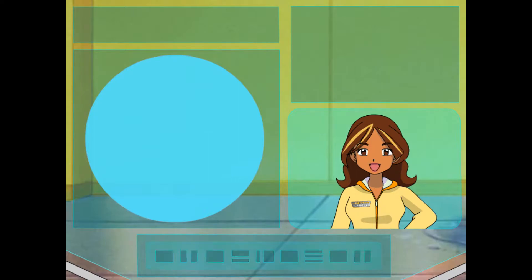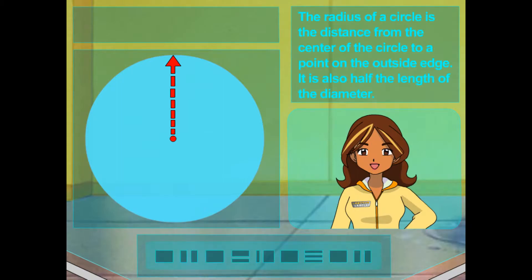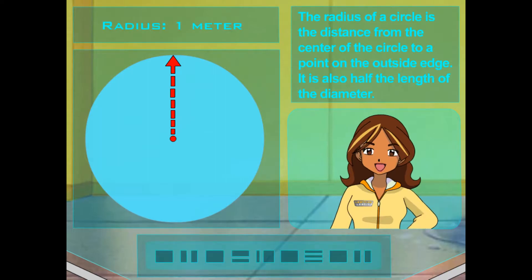To find the area of the circle, though, we need to find the radius. Do you know what the radius of a circle is? I think so. It's like a ray of light. It goes from the center to the outside? That's a good way of thinking about it. It's the distance from the center of the circle to an outside point. It's also half of the diameter. So in this case, the diameter is two meters, meaning the radius is... one meter. Psy. You got it.